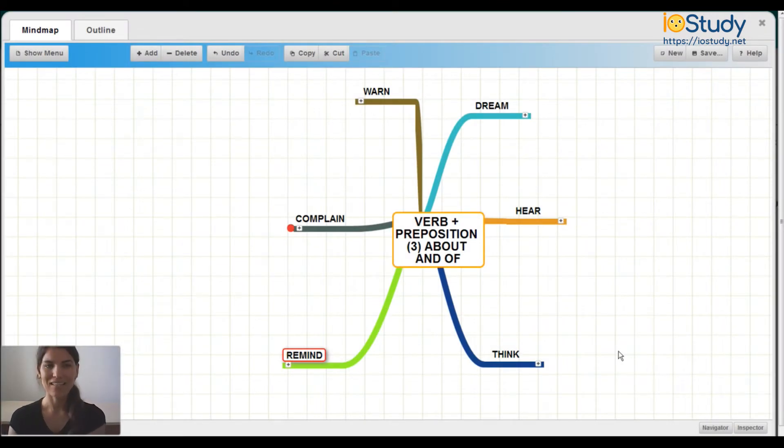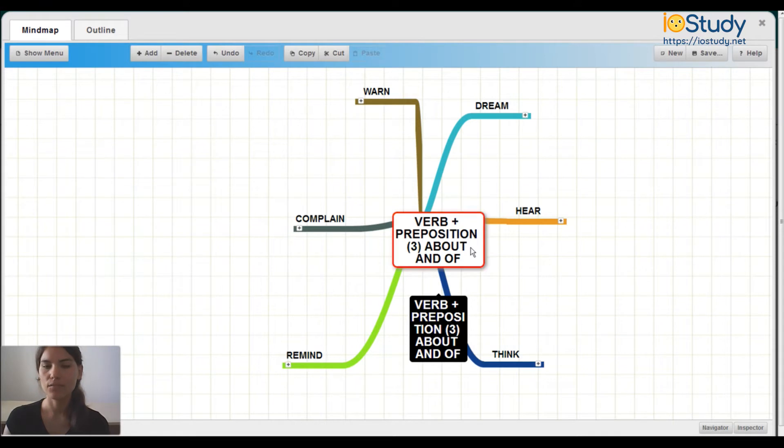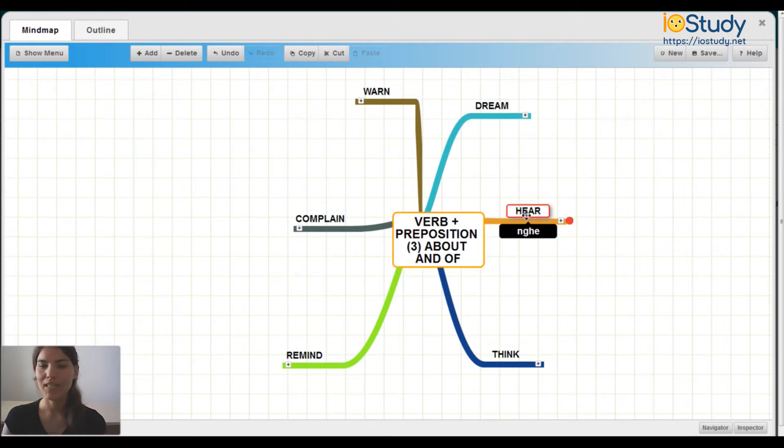Hello everyone, this is Danielle and in this video we're going to talk about the English grammar rules for verb plus preposition about and of. As you can see here we have six things to talk about. We're going to discuss the verbs dream, hear, think, warn, complain, and remind.